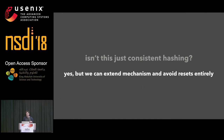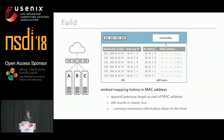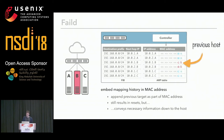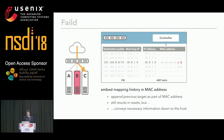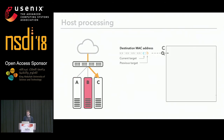The beauty is we can extend this mechanism to avoid resets entirely by embedding more information into the MAC address. In addition to the current host, which reflects the current state of the server pool, we can also encode the previous host into the same address. The switch can't use this information, but it conveys the necessary information down to the host. Now the host decides what to do next. Another component of FAIL-D is host-side processing, which is a kernel module.